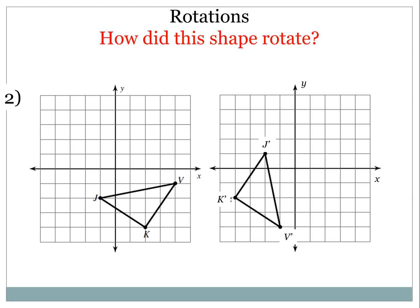Alright, so let's take a look at shape number 2. So how did this shape rotate? It looks like the shape rotated, this time spinning to the right or clockwise, and I want to look specifically at point K.